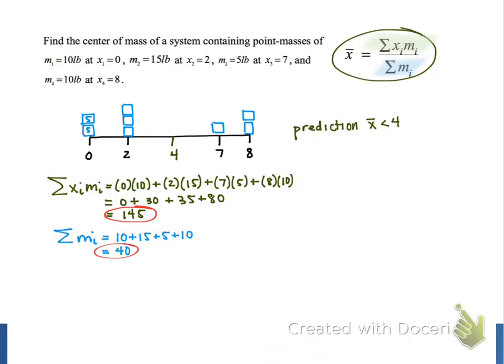To calculate the center of mass, we divide the 145 by 40, and then we're going to simplify that to get a decimal approximation, and the result is 3.625.